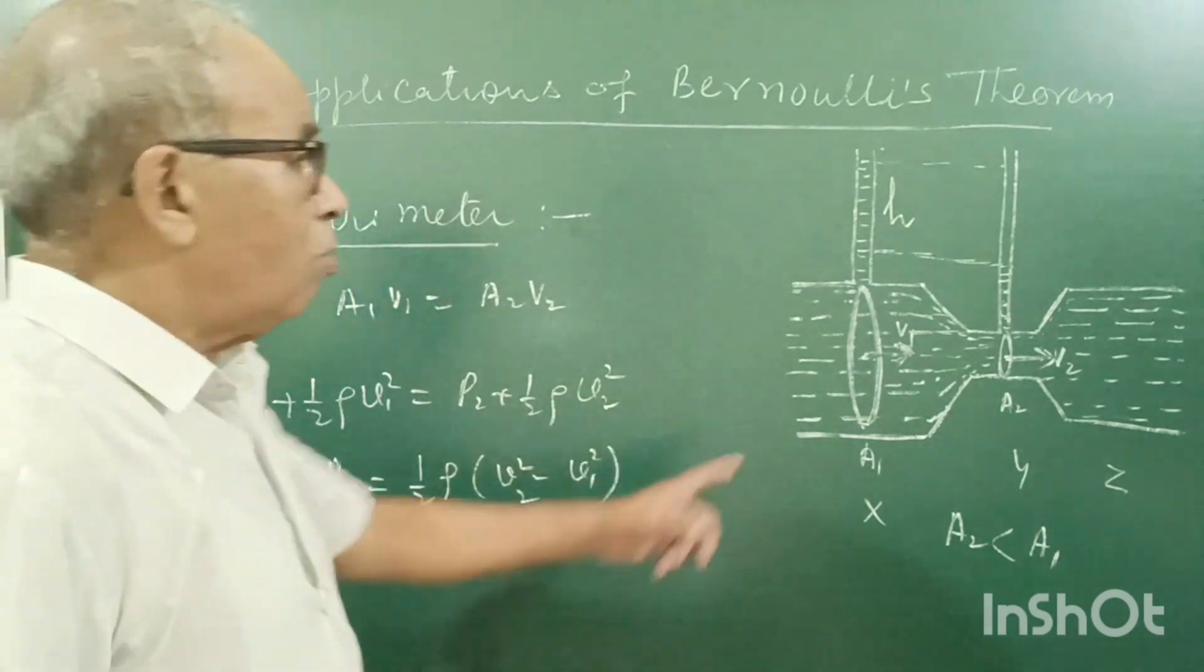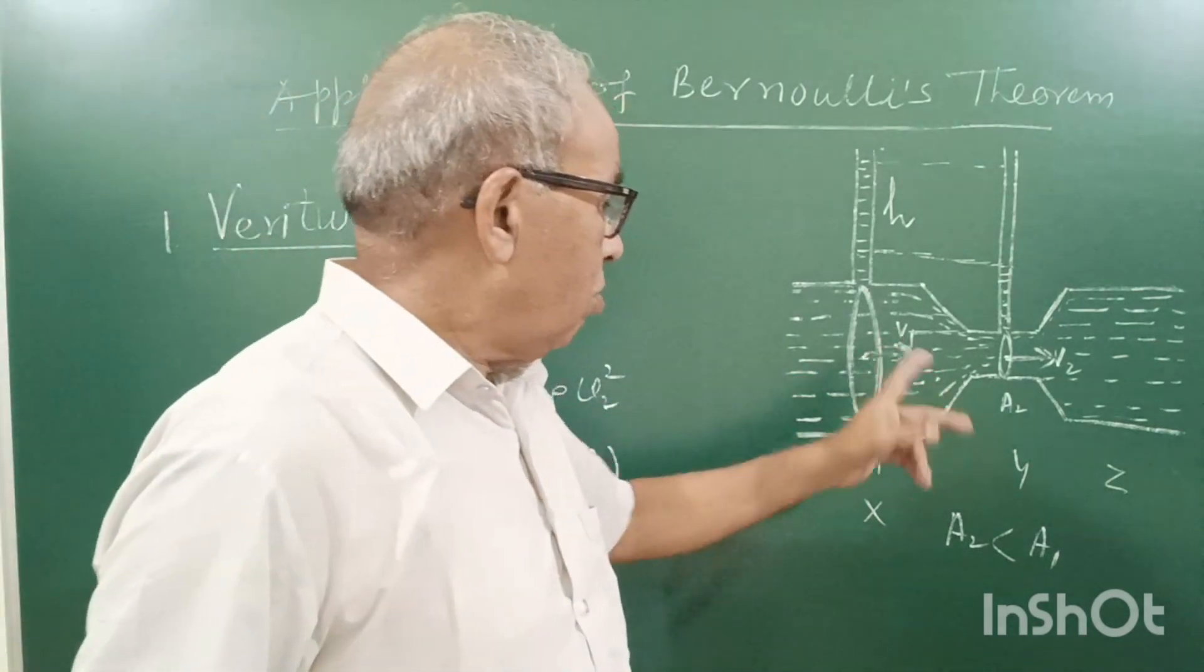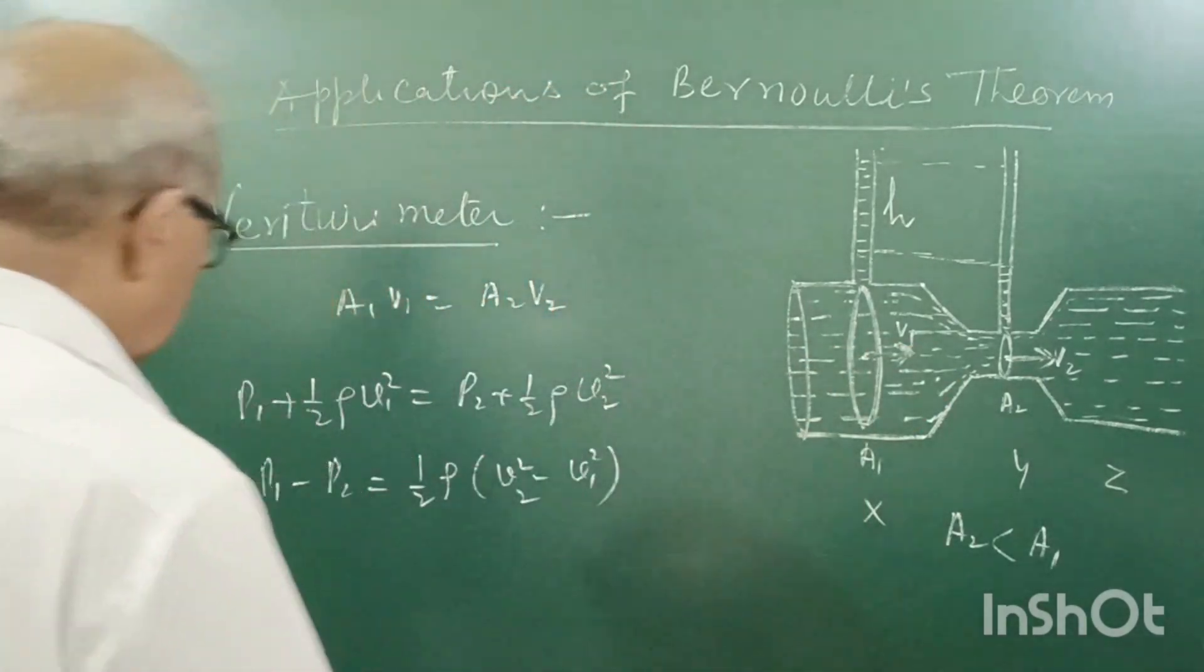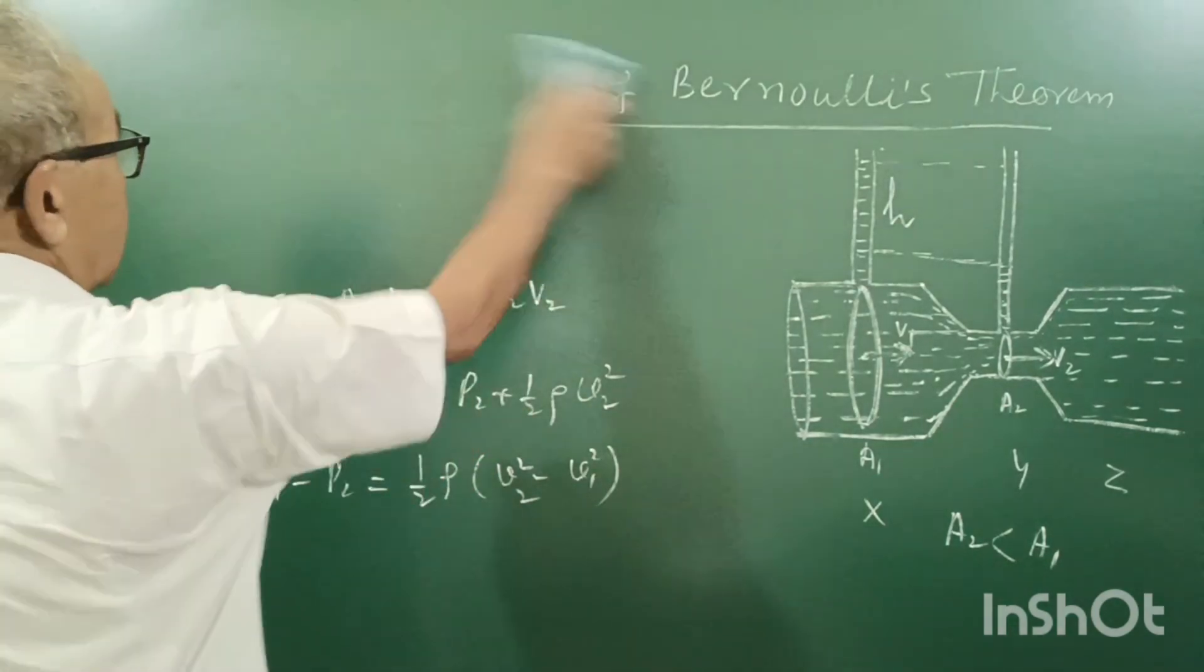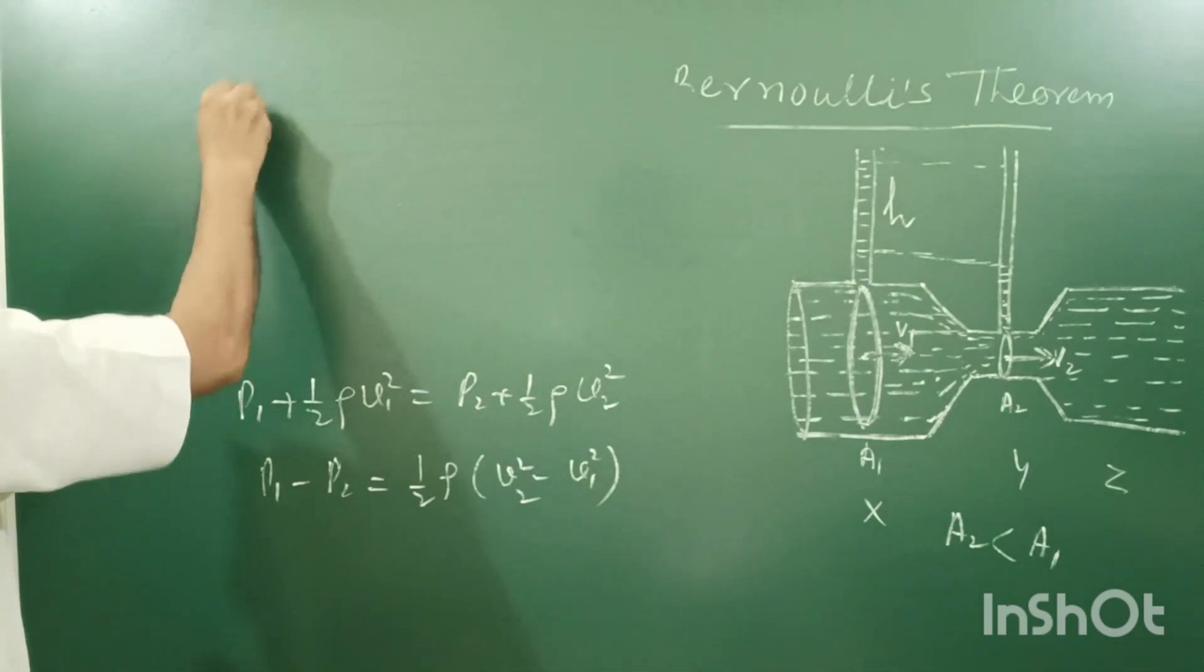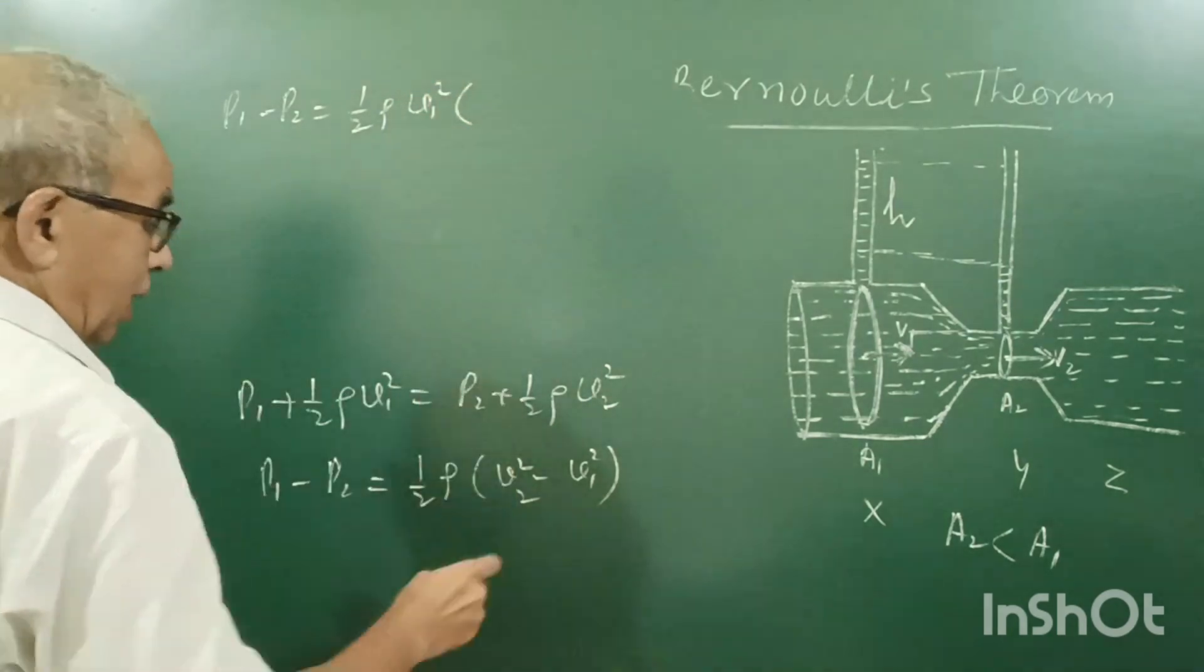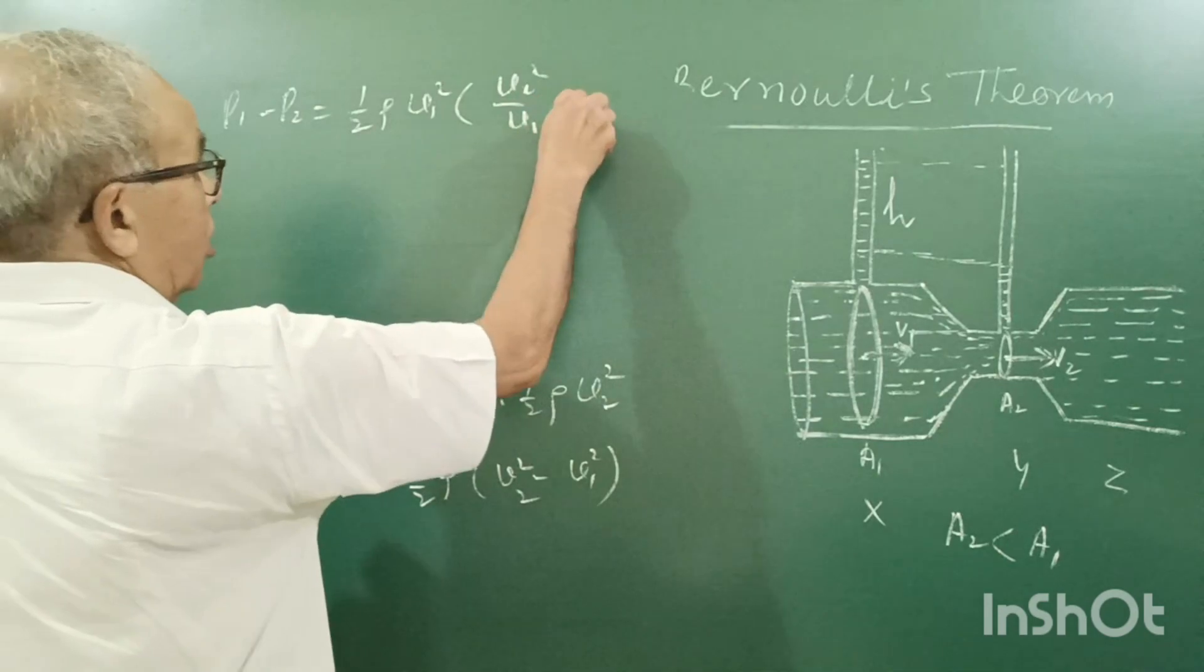Actually, we have to find out velocity V1. So, we can take V1 common outside, and write P1 minus P2 equal to half rho V1 square bracket, V2 upon V1 square minus 1.